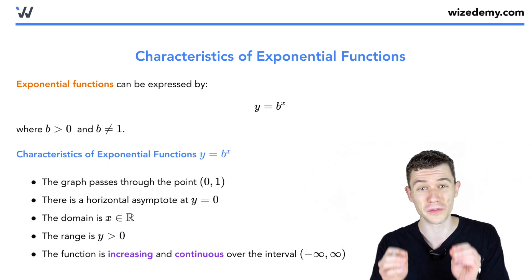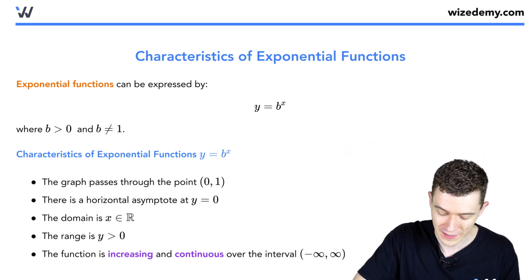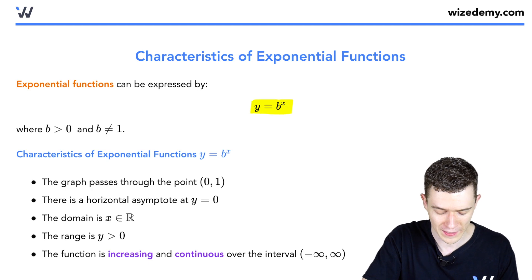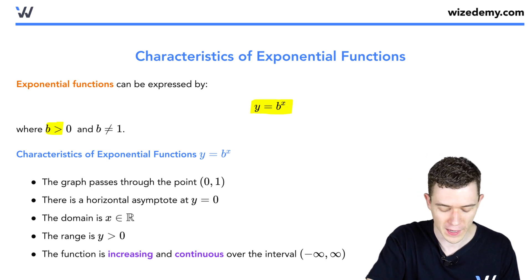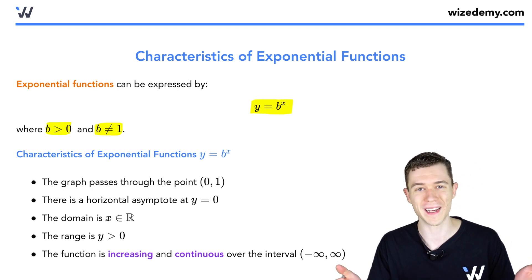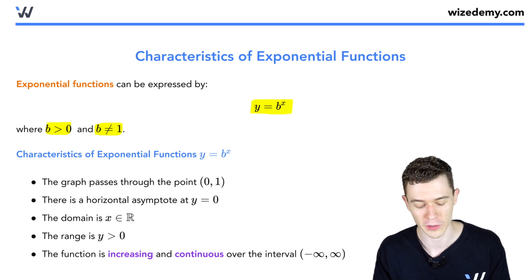Let's take a look at exponential functions. They look like this, y equals b to the x. Here we're letting b be positive, and not 1. 1 to any power is 1. That wouldn't be very interesting.